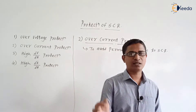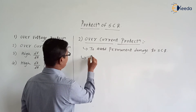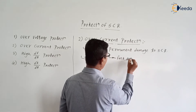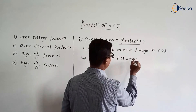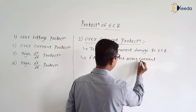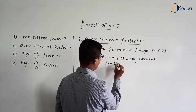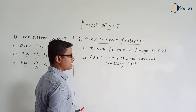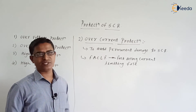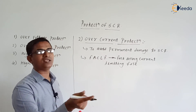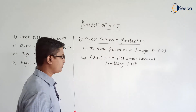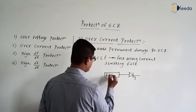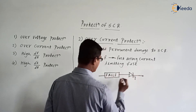To protect the SCR against over current, we use a fast acting current limiting fuse, abbreviated as FACLF. The FACLF is connected in series with the SCR, because it is for over current protection. When connected in series, the current flowing through the fuse and the SCR will be the same.